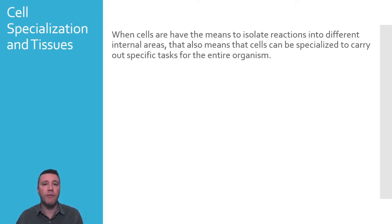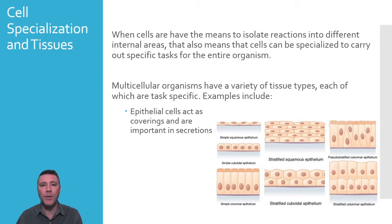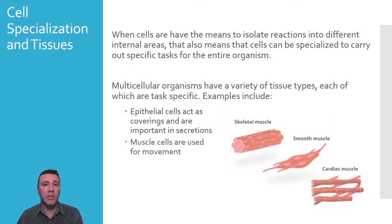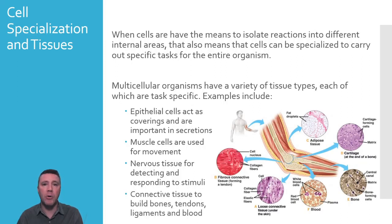Groups of cells with a similar structure and physiology are referred to as tissues. Examples of tissues include epithelial tissue, which has functions including providing a covering for internal and external surfaces, as well as being important in the secretion of fluids. Examples of epithelial tissue in animals include skin and scales, and secreted fluids like saliva and stomach acid. Muscle tissue is exclusive to animals — skeletal muscle is under voluntary control, whereas smooth and cardiac muscle are involuntary, found lining the digestive system and the heart, respectively. Nervous tissue is also unique to animals, responsible for detecting and responding to both internal and external stimuli. An animal's connective tissue is important in constructing bones, tendons, and ligaments.